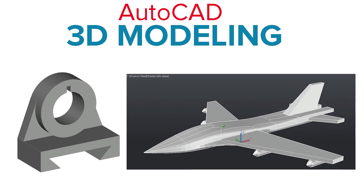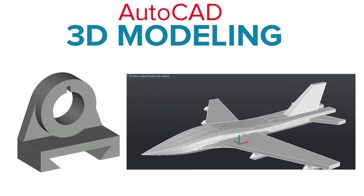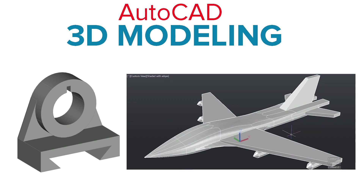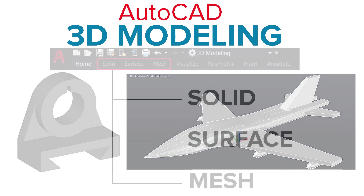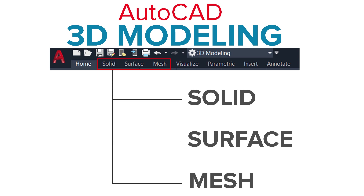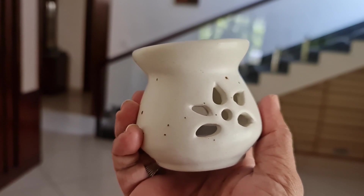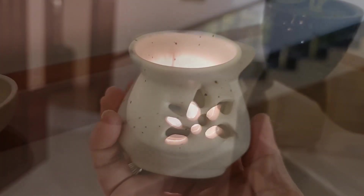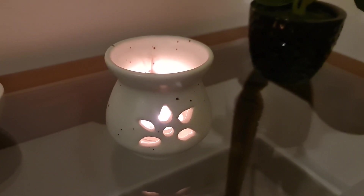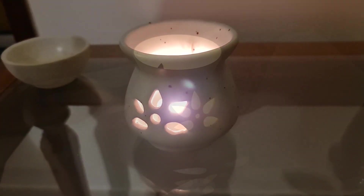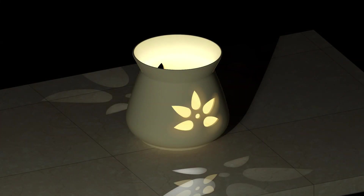In three-dimensional modeling, we create a 3D representation of an actual or conceptual object using the various tools available in a 3D modeling software. In AutoCAD software, we use solid, surface, and mesh modeling techniques to create a 3D model. In this tutorial video, I'll explain the procedure to create this aroma part using surface modeling techniques, then we will light up and render this model after specifying suitable materials. This is a comprehensive tutorial which deals with 3D modeling and rendering. By the time you complete this tutorial, you will get this output. So let's get started.